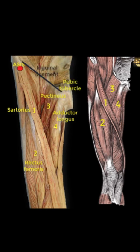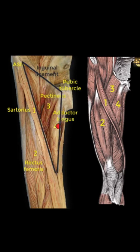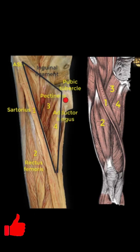The muscular boundaries: the lateral boundary is formed by the sartorius muscle, and the medial boundary is formed by the adductor longus muscle. To be specific, it is the medial border of the adductor longus muscle that forms the medial border of the triangle.